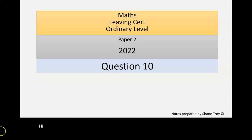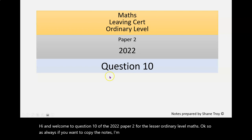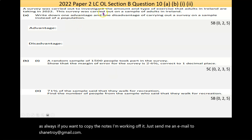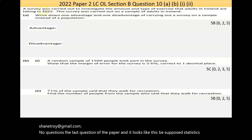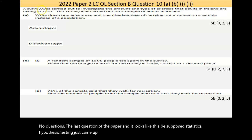Hi, and welcome to question 10 of the 2022 paper 2 for the Leaving Certificate Ordinary Level Maths. As always, if you want a copy of the notes I'm working off, just send me an email to shanetroy at gmail.com. Question 10 is the last question of the paper, and it looks like this would be statistics and hypothesis testing, which just came up every year for the last number of years.